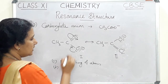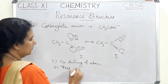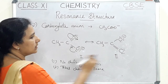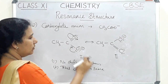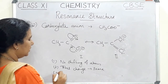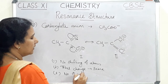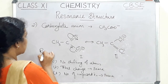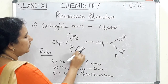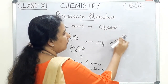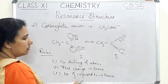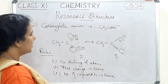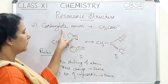The second rule is that total charge must be the same. In this case, the first structure has a negative charge and the second structure also has a negative charge, so the same charge is maintained for both structures. The third rule is that the number of unpaired electrons should be the same. Counting here: 1, 2, 3, 4, 5 — and in the second structure also: 1, 2, 3, 4, 5. So the total number of unpaired electrons is the same in both structures. These are the two resonating structures of the carboxylate anion.